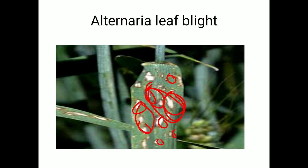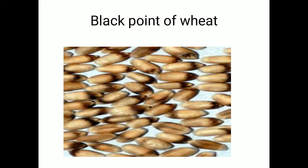The next disease is black point of wheat, which is a complex disease caused by different fungi: Alternaria, Helminthosporium, and Fusarium. When these fungi attack, the pericarp of maturing wheat kernels turns dark brown to black with discoloration. If caused by Alternaria, the dark color affects only the pericarp; if caused by Helminthosporium or Fusarium, the embryo may be invaded, injured, or killed.